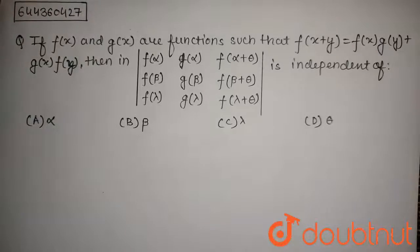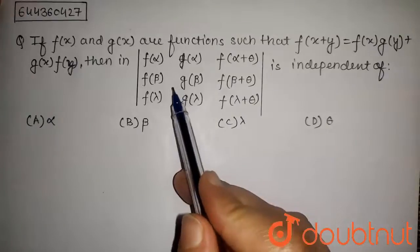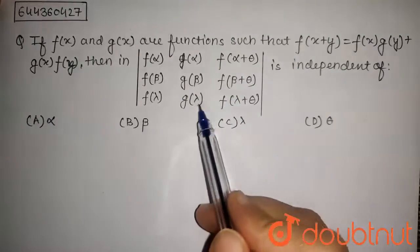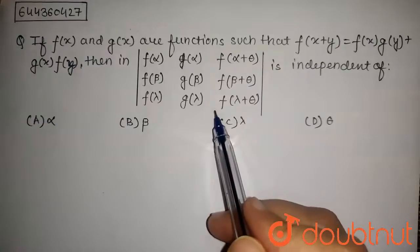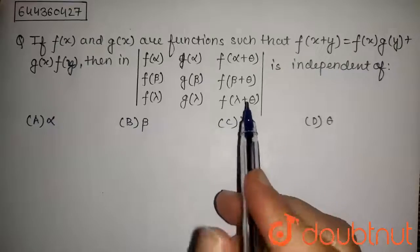The question is: if f and g are functions such that f of x plus y equals f of x g of y plus g of x f of y, then in the determinant with elements f alpha, g alpha, f of alpha plus theta in the first row; f beta, g beta, f of beta plus theta in the second row; f lambda, g lambda, f of lambda plus theta in the third row, is independent of what?